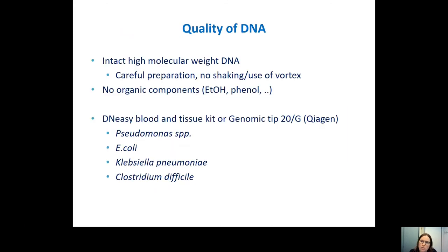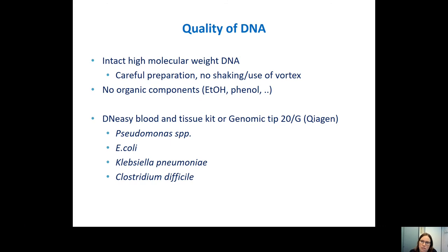When you start using nanopore sequencing, you have to pay attention to DNA quality. You want to have high intact, high molecular weight DNA. What you put in the sequencer is what you get out — so if you break the pieces of DNA, you will also get small pieces. Be careful with preparation: don't shake or vortex too much. Also, because the pores are biological molecules, you don't want any organic components in your run as these will disturb and damage the pores — no ethanol or phenol in your sample.